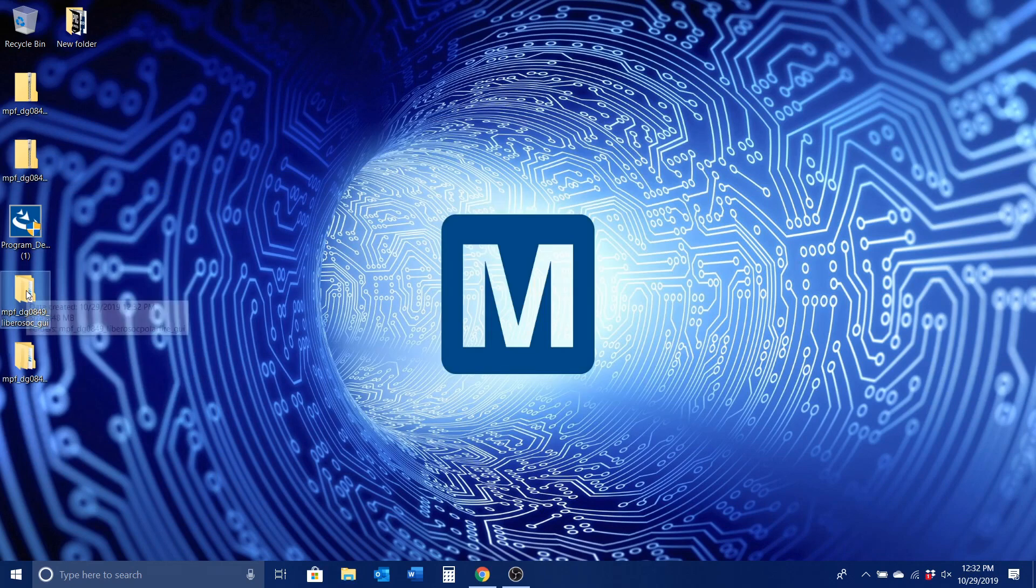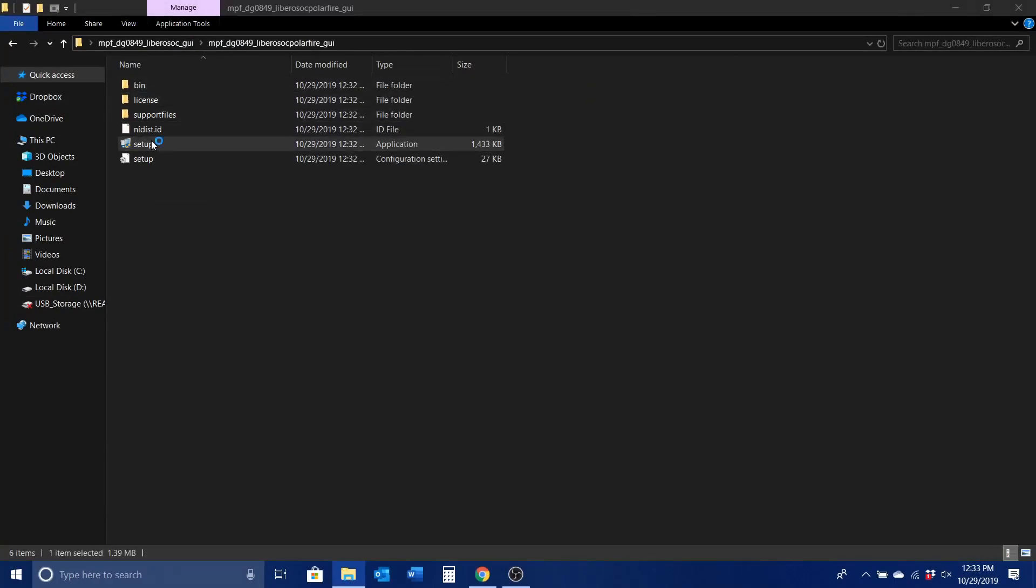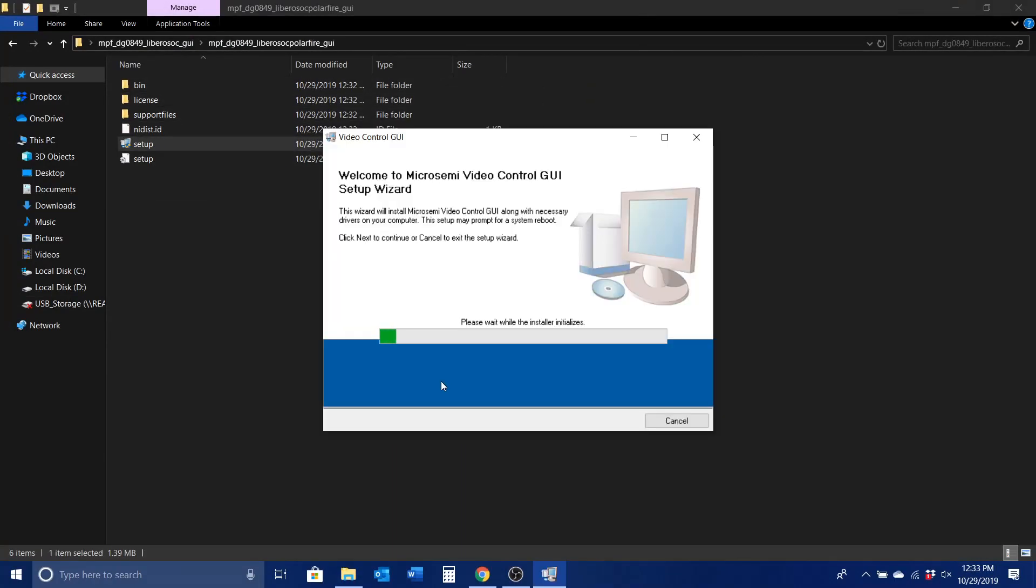Open the folder containing the file name LibraryOSOC GUI and run the setup application file to install the video control GUI following all on-screen instructions.